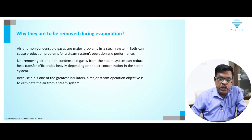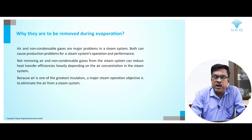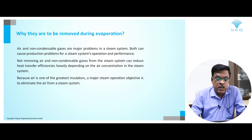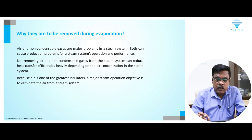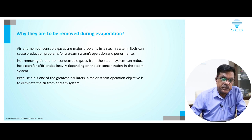Why do they need to be removed from evaporation? Air and non-condensable gases are major problems identified in any steam system. Both can cause production losses, and steam system operation and performance may deteriorate, because air is one of the greatest insulators. A major objective is to eliminate the air from the steam system — that is why NCG needs to be eliminated from the evaporation.